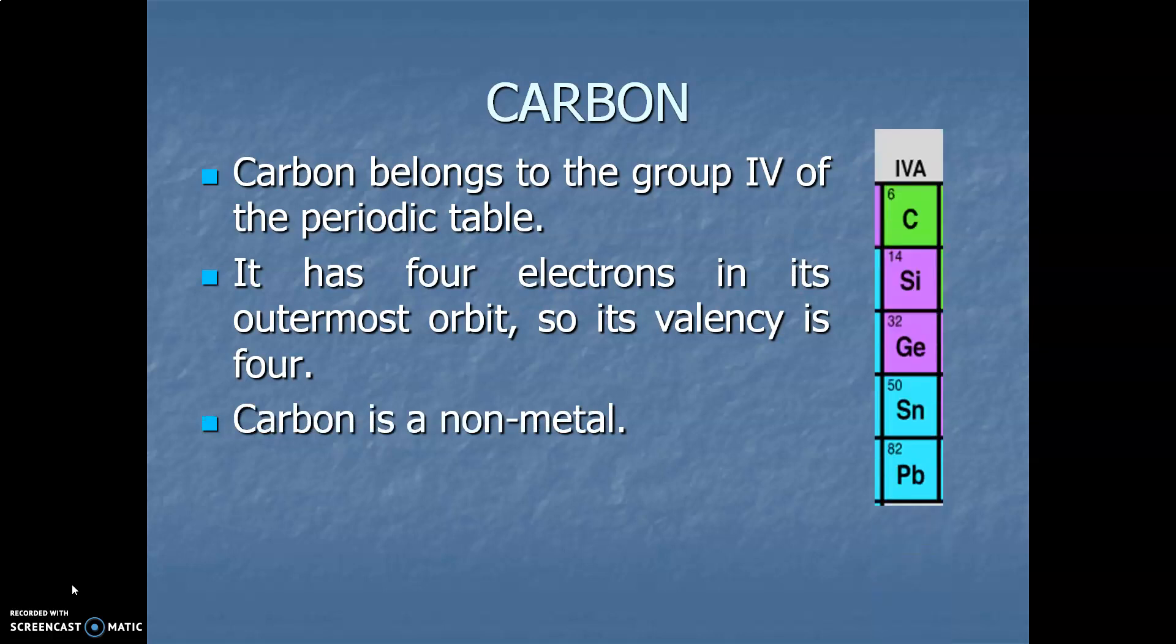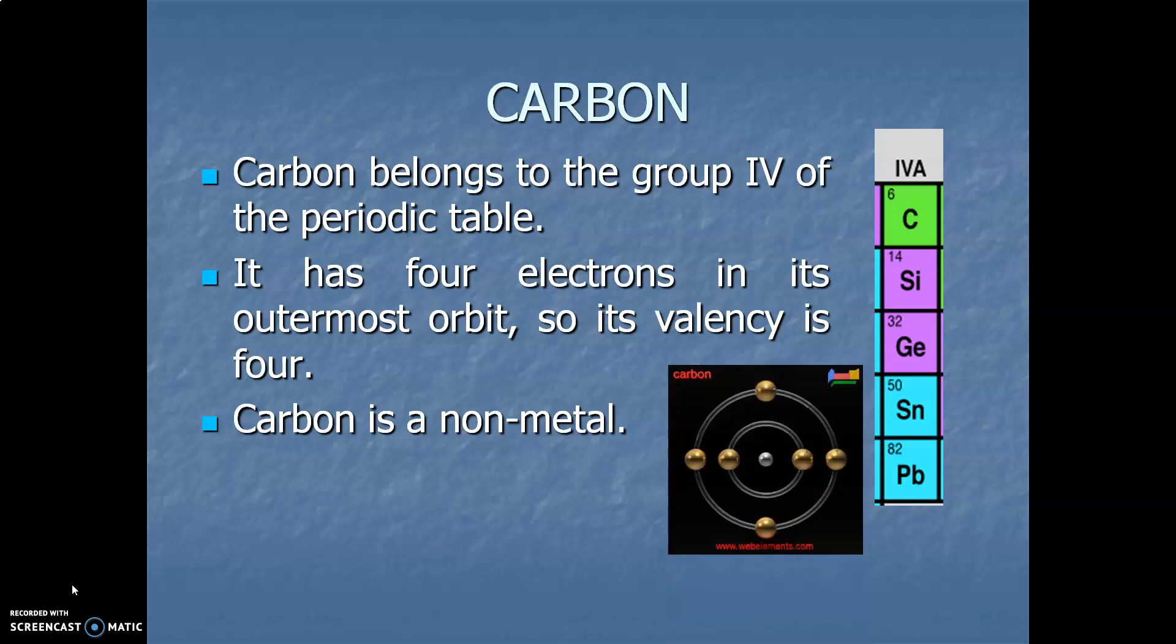Carbon belongs to group 4 of the periodic table. Symbol is C. The electronic configuration for carbon will be 2 and 4. It belongs to group four because it has four electrons in its outermost orbit, so its valency is four. And very important that carbon is a non-metal.